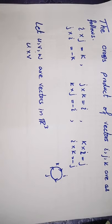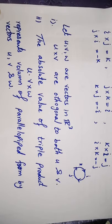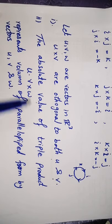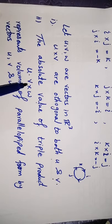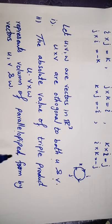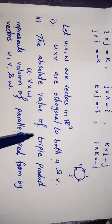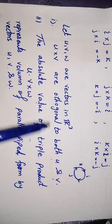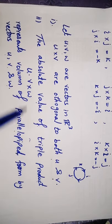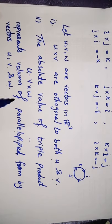We have some properties: if u, v, and w are vectors in R3, then u cross v is orthogonal to both u and v. Also, the absolute value of the triple product, defined as u·(v cross w), represents the volume of the parallelepiped formed by vectors u, v, and w.